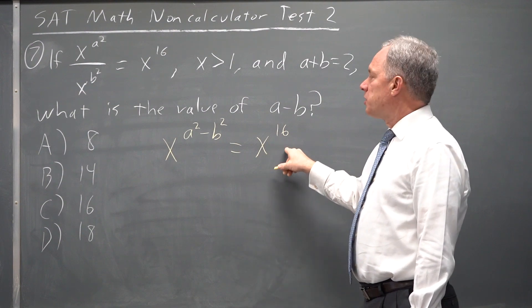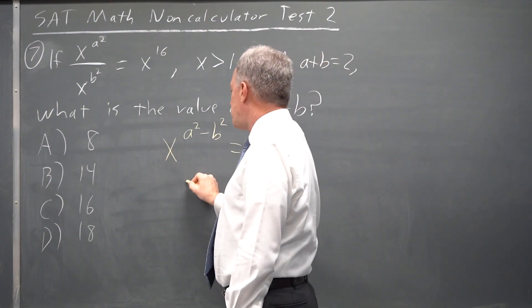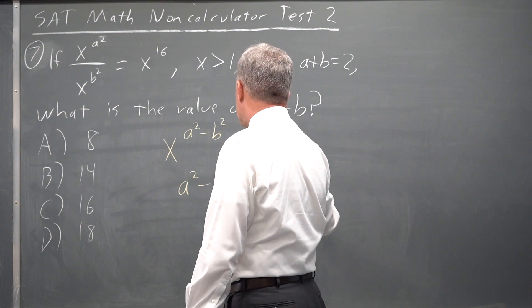If two powers of the same base are equal, their exponents are equal, so I have a squared minus b squared equals 16.